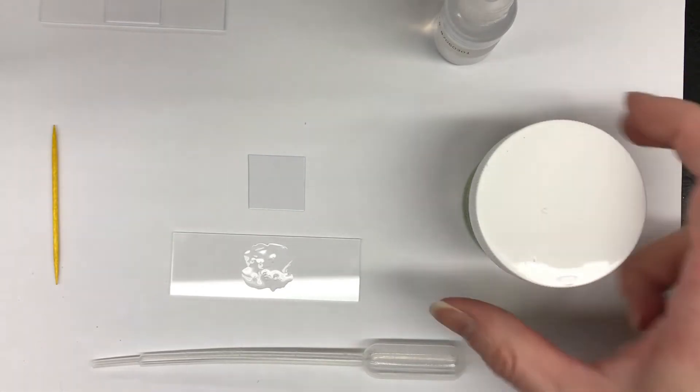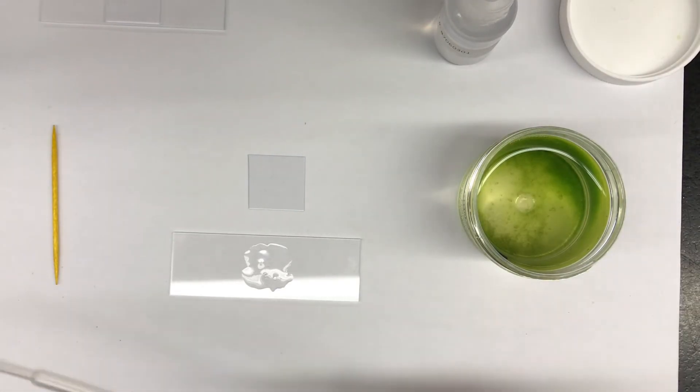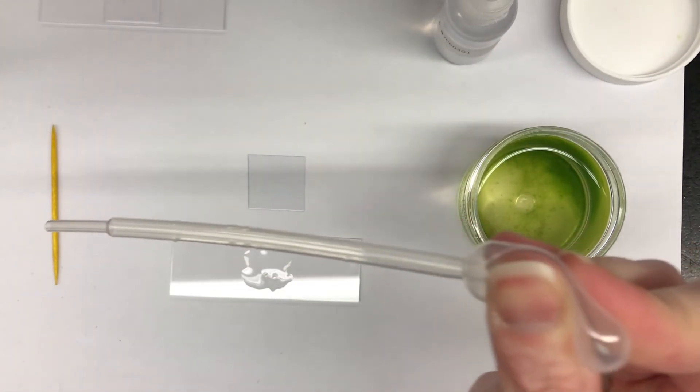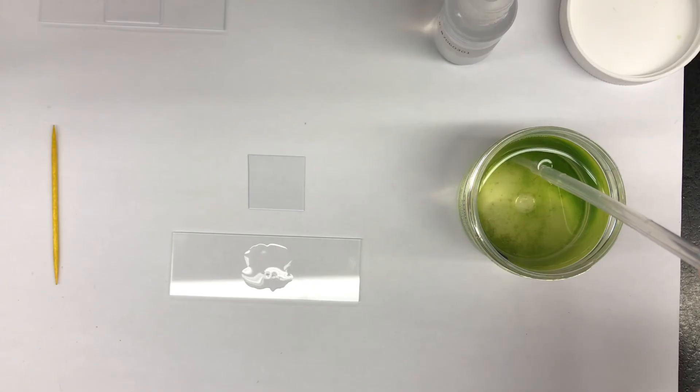Now you're going to take the lid off of your sample. Squeeze the pipette before putting it into the water. We're going to place the tip into the jar and just suck up a little bit of liquid.